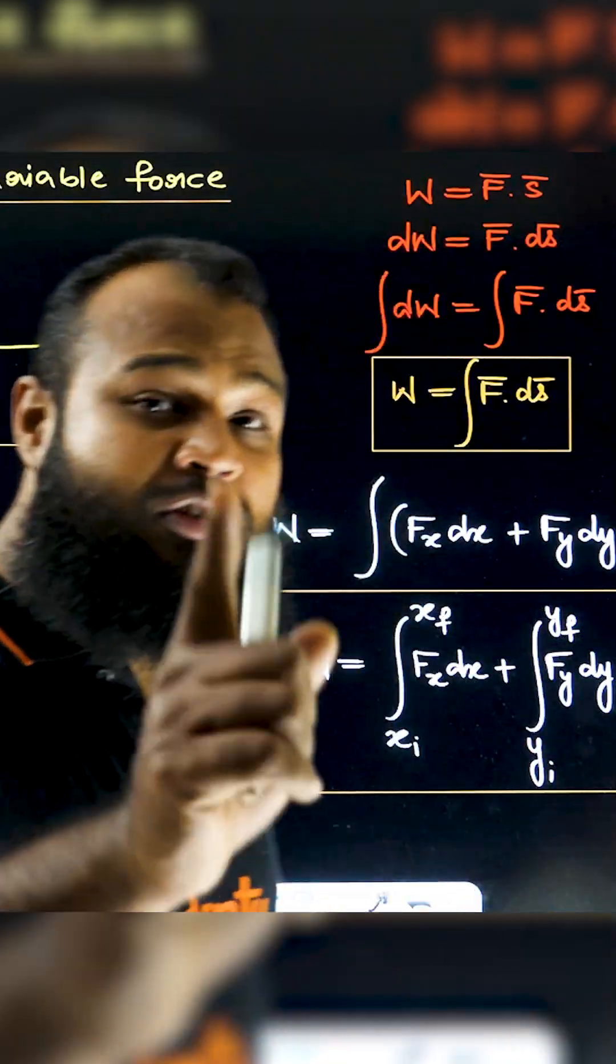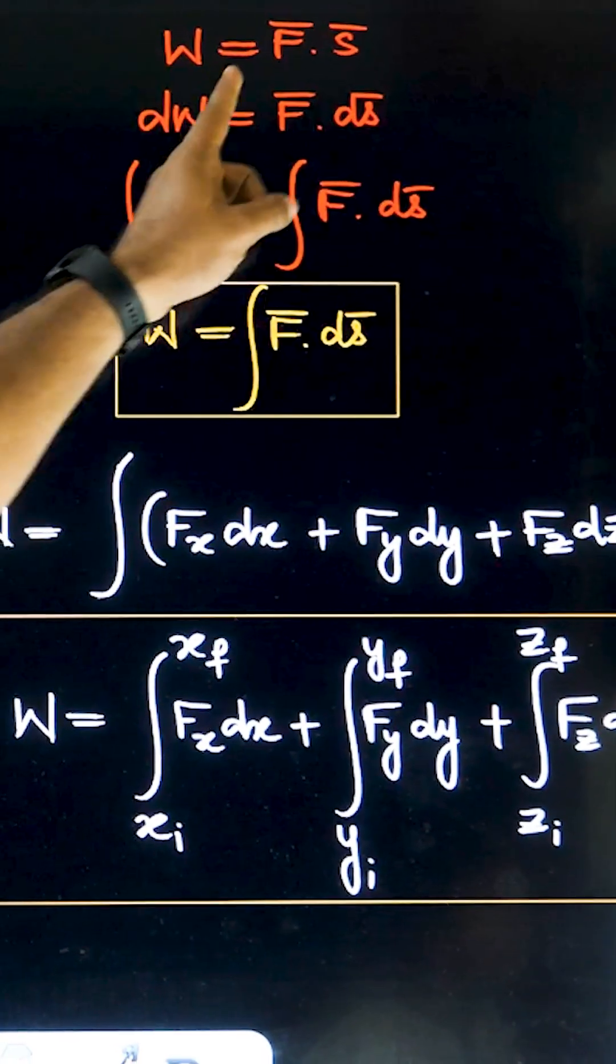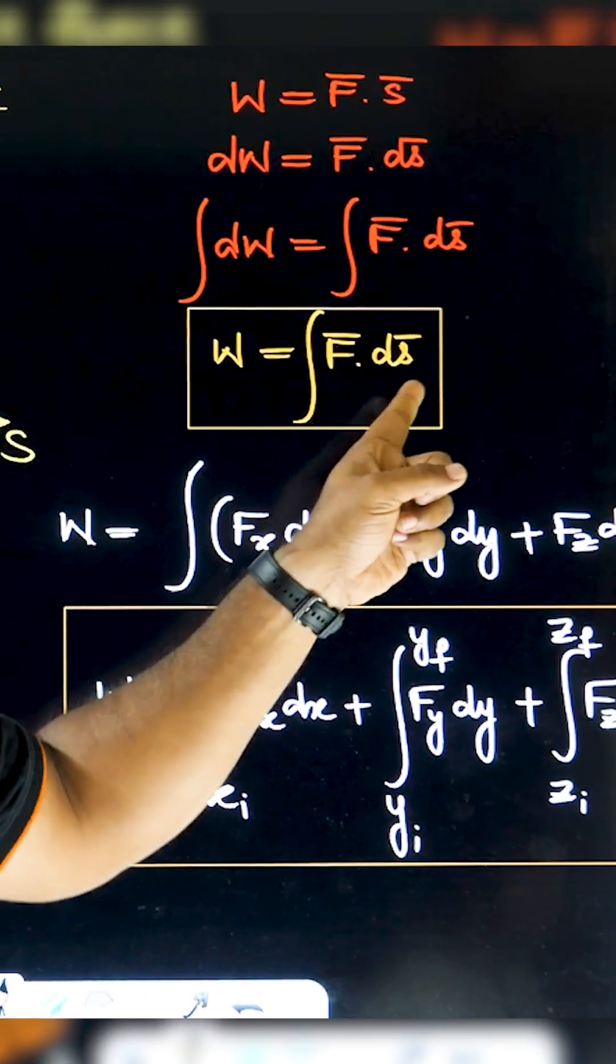Work done by variable force. For a constant force, work can be calculated using W = F·s. For a variable force, we use the integral: W = ∫F·ds.